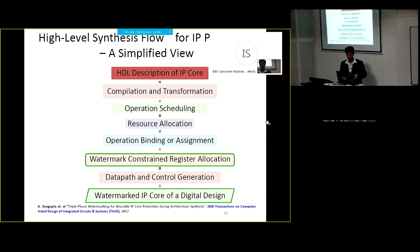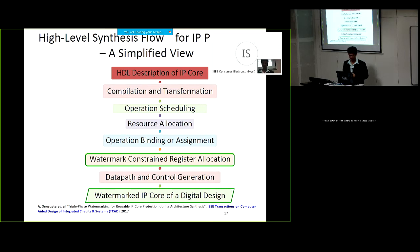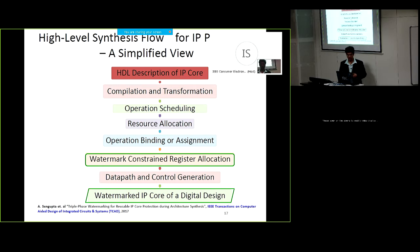Let me get into more details of how to embed a watermark in an IP. We start from an HDL description of an IP core, perform multiple steps of compilation and transformation followed by operation scheduling, resource allocation, and binding. We then put the watermarking constraints in the register allocation step followed by data path and control path generation, and finally get the watermarked IP digital design in the form of an HDL code.